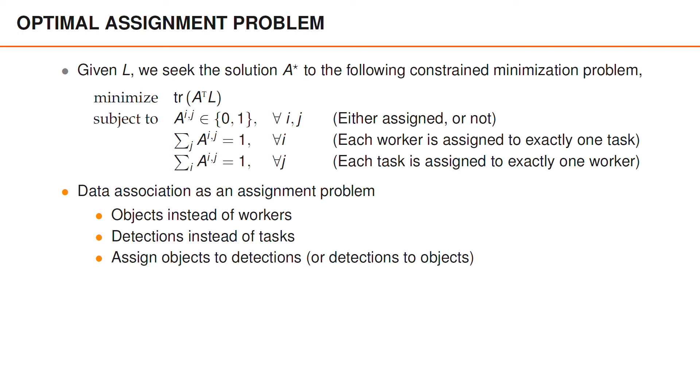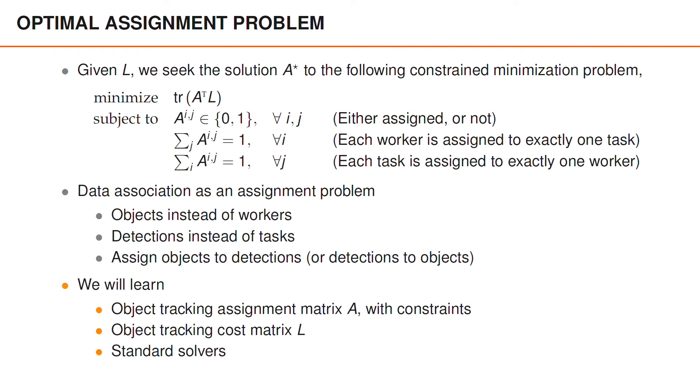We can see data association as an assignment problem. We have objects instead of workers, we have detections instead of tasks, and we wish to assign objects to detections or equivalently detections to objects. So what we will learn next is what the object tracking assignment matrix A is with constraints, what the object tracking cost matrix L is, and we will also learn a little bit about some standard solvers.